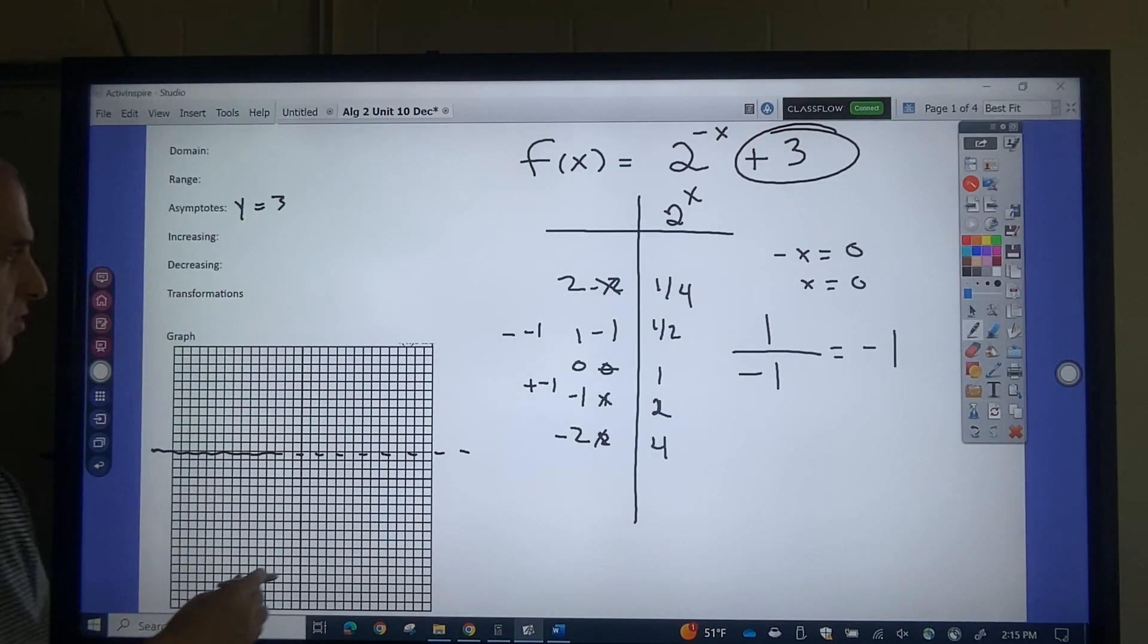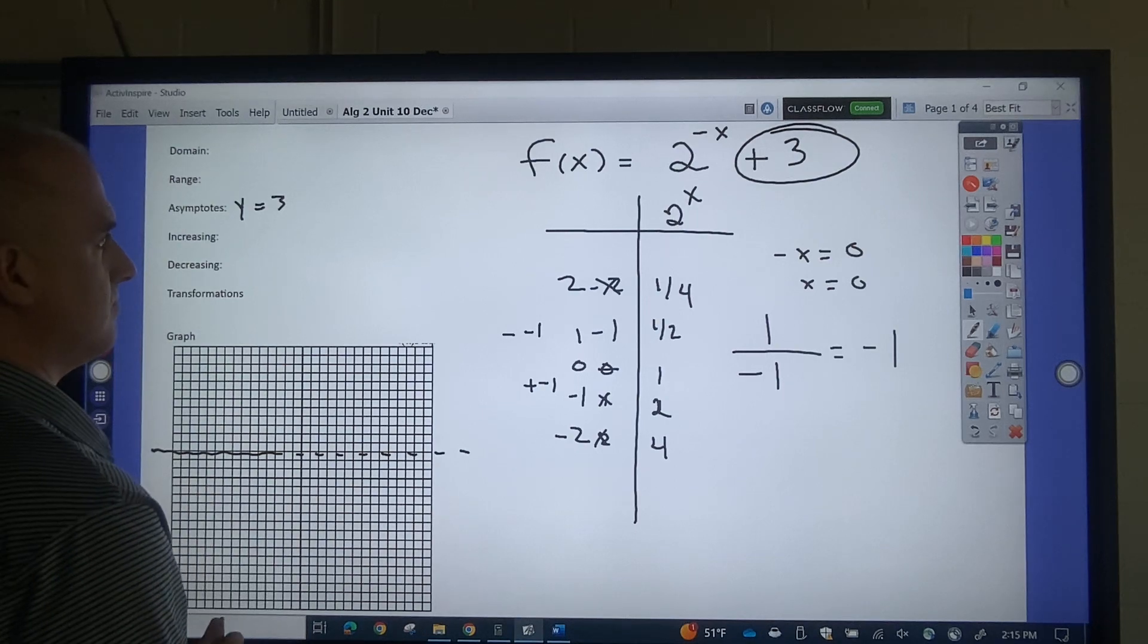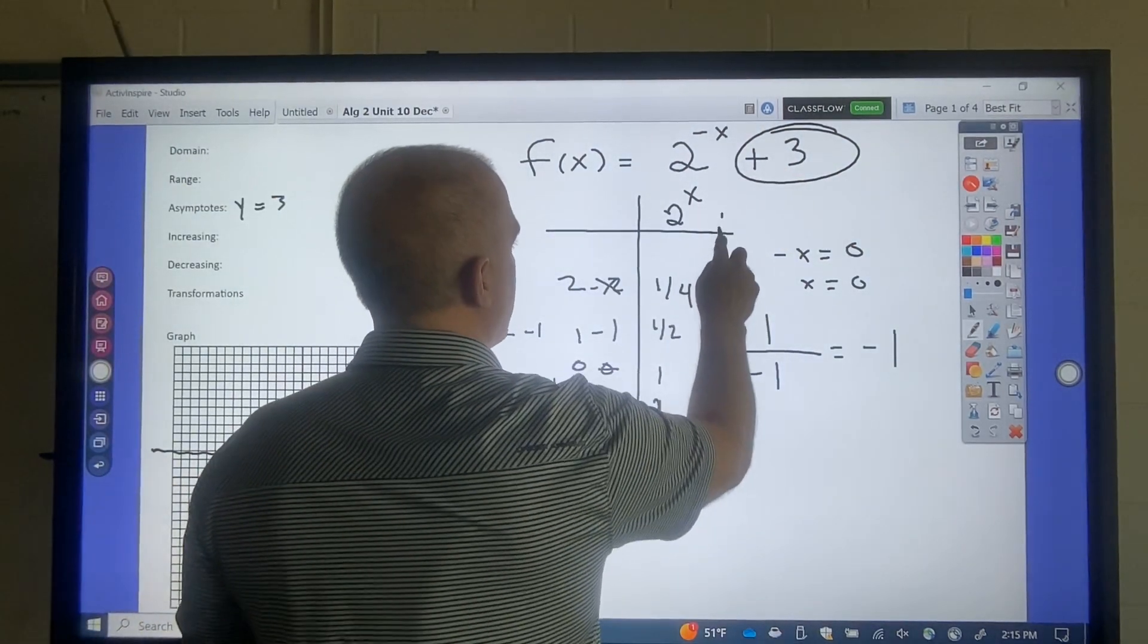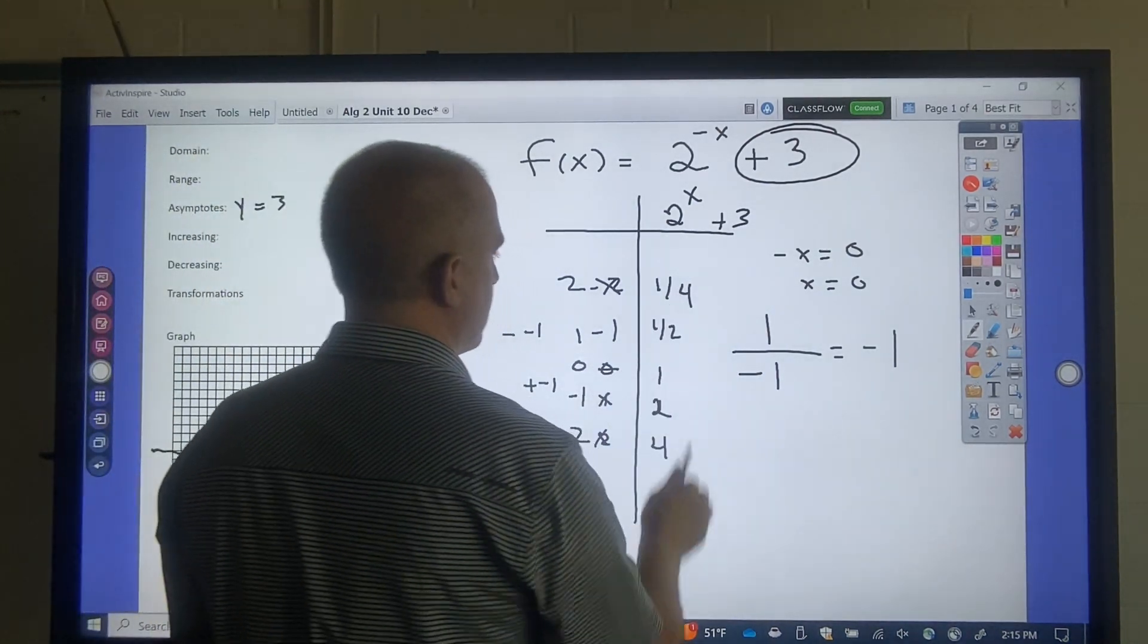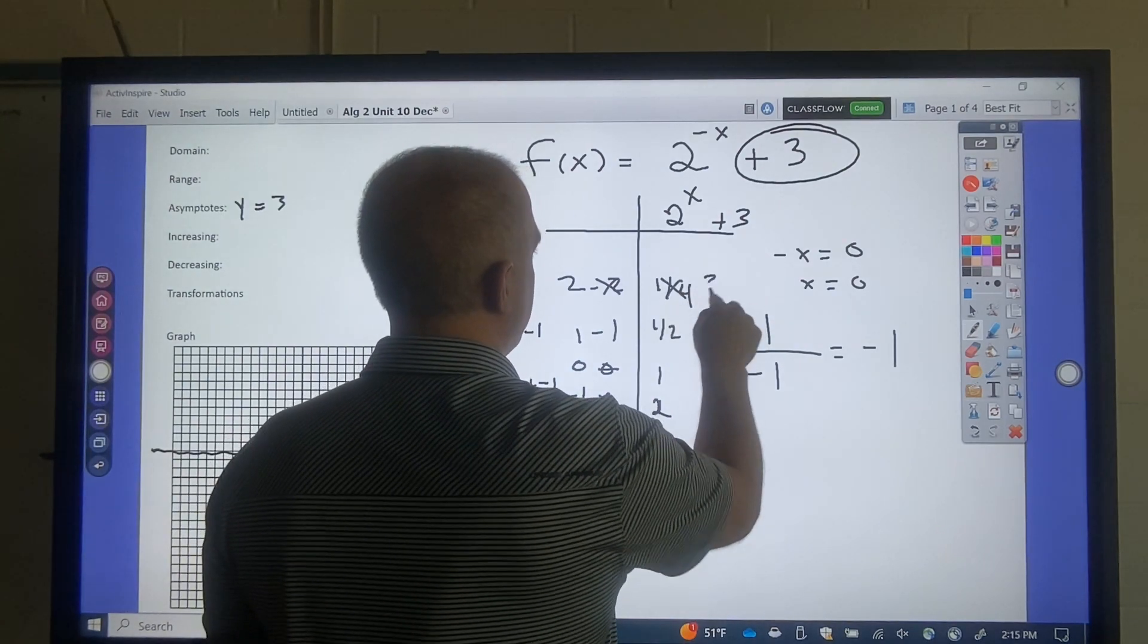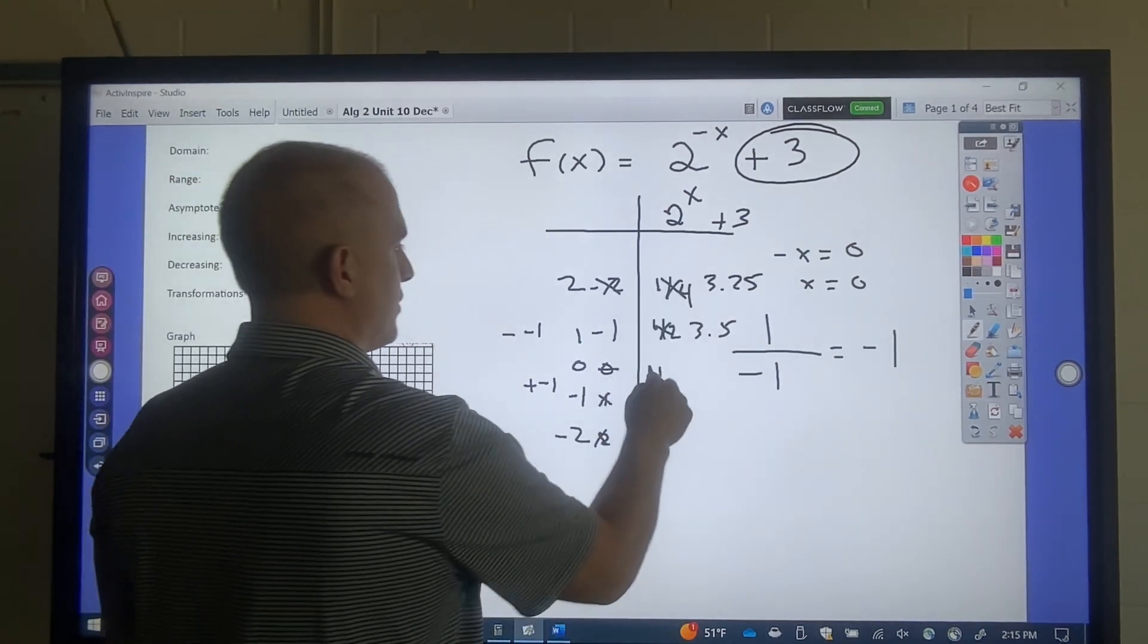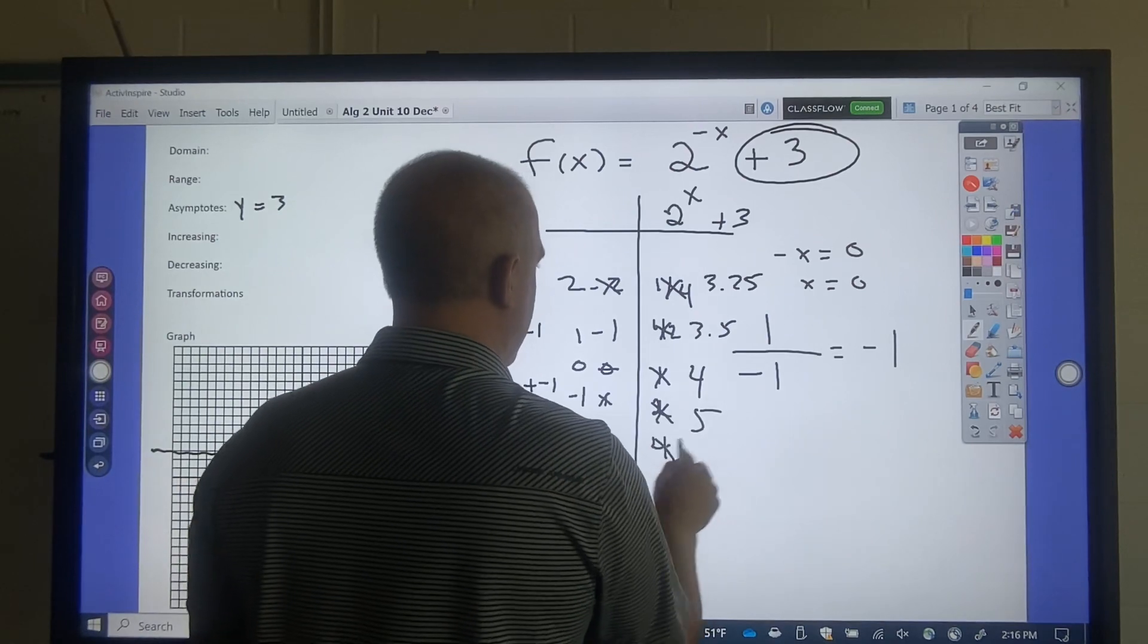So if I plot those points, 0 over, then I've got to change the y values. And I'm going to change the y values by adding 3. So 0.25, that's what that is. That would be now 3.25. It would be a half plus 3 would be 3.5. 1 plus 3 is 4. 2 plus 3 is 5. 4 plus 3 is 7.